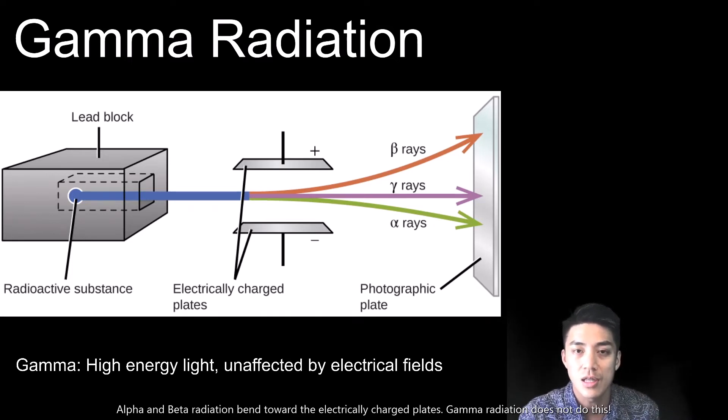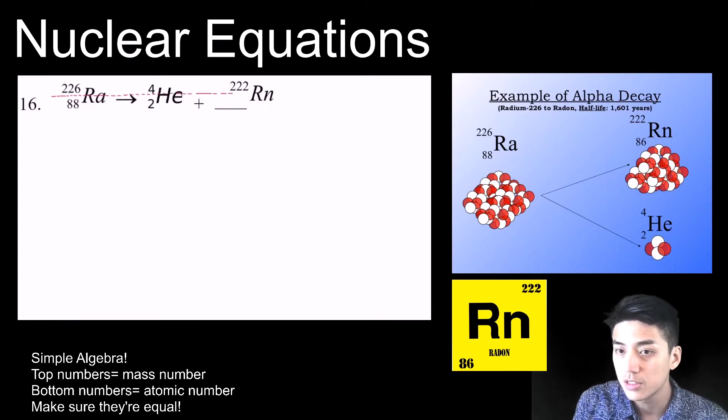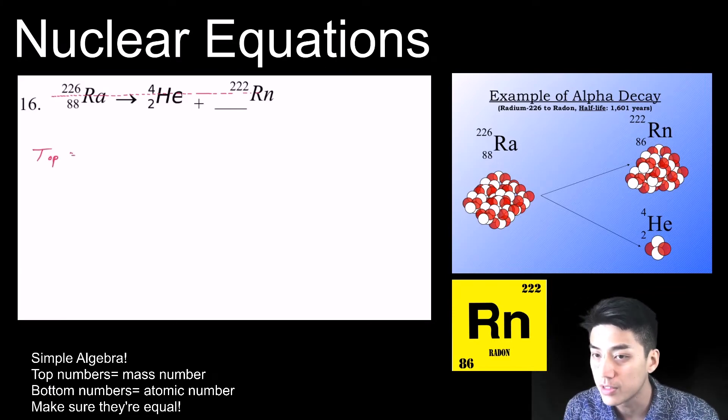It's just simply high energy light. Let's do nuclear equations. Nuclear equations just show you how one isotope changes into a different element after it undergoes alpha radiation.